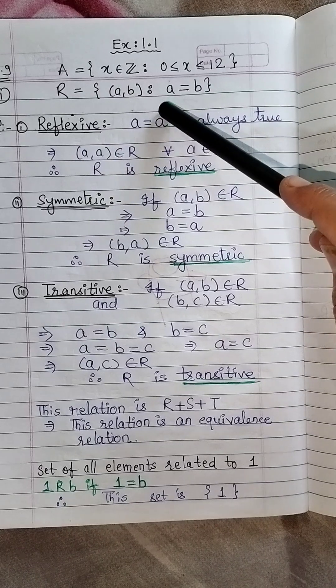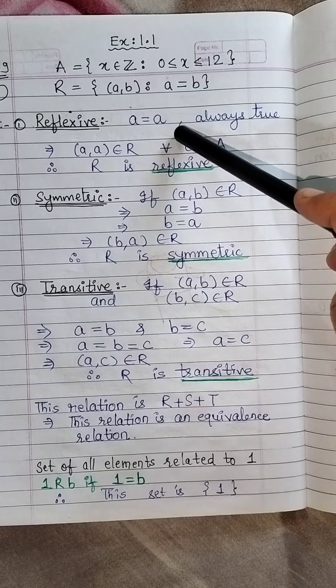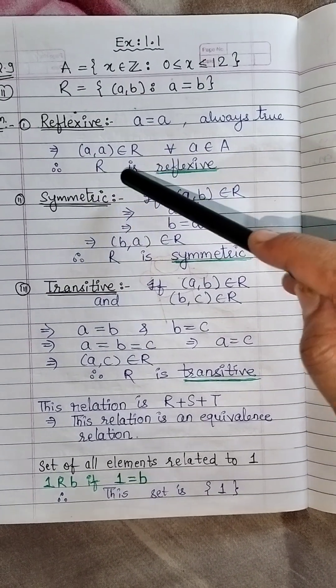For reflexive, it is obvious that if you take any number that will be equal to itself. So AA that A is equal to A is always true and hence AA, the pair AA belongs to R. So it is reflexive.